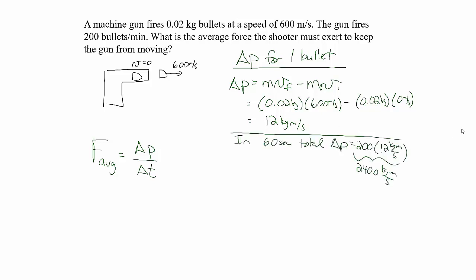In 60 seconds, in one minute, there's 200 bullets that are fired. So in 60 seconds, the total change in momentum is 200 bullets times 12 kilogram meters per second per bullet, which is a total change in momentum of 2,400 kilogram meters per second.